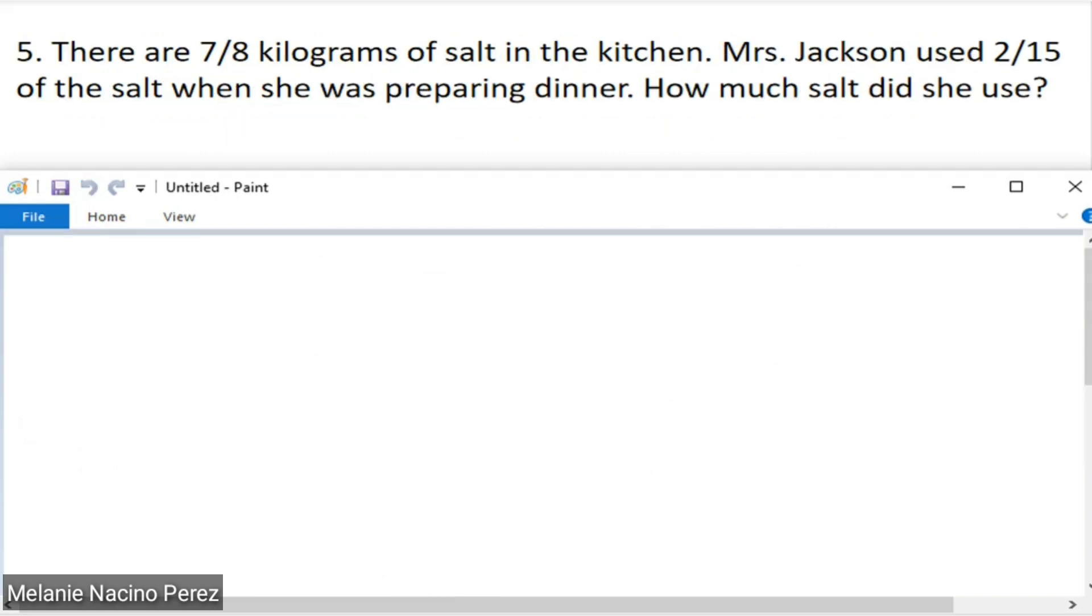The next problem: there are 7/8 kilograms of salt in the kitchen. Mrs. Jackson used 2/15 of the salt when she was preparing dinner. How much salt did she use? Same procedure as how we solved the first problem earlier. What we need to find out is 2/15 of 7/8, because 2/15 is what Mrs. Jackson used of the salt when she cooked dinner. And we have a total of 7/8 kilograms of salt in the kitchen. What we need to do is multiply numerator by numerator and denominator by denominator. 2 times 7 equals 14, and 15 multiply by 8 is equivalent to 120.